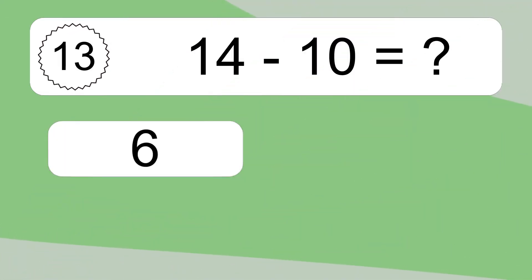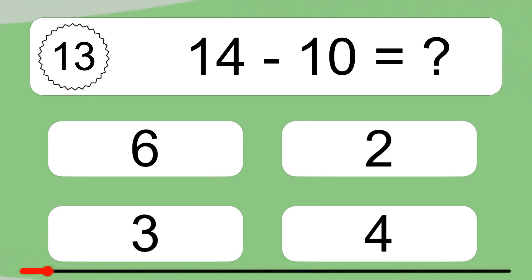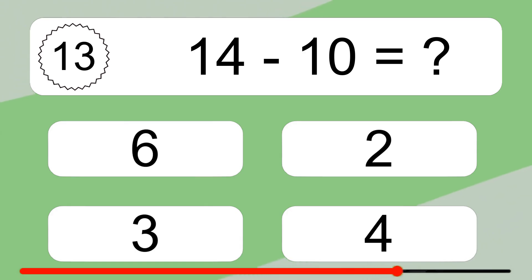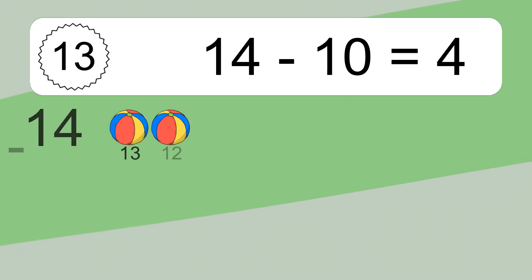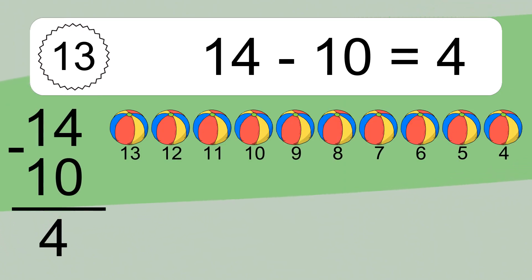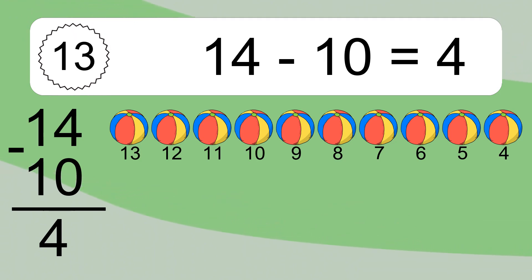14 minus 10 equals what? 14 minus 10 equals 4. Let's count it: 13, 12, 11, 10, 9, 8, 7, 6, 5, 4.